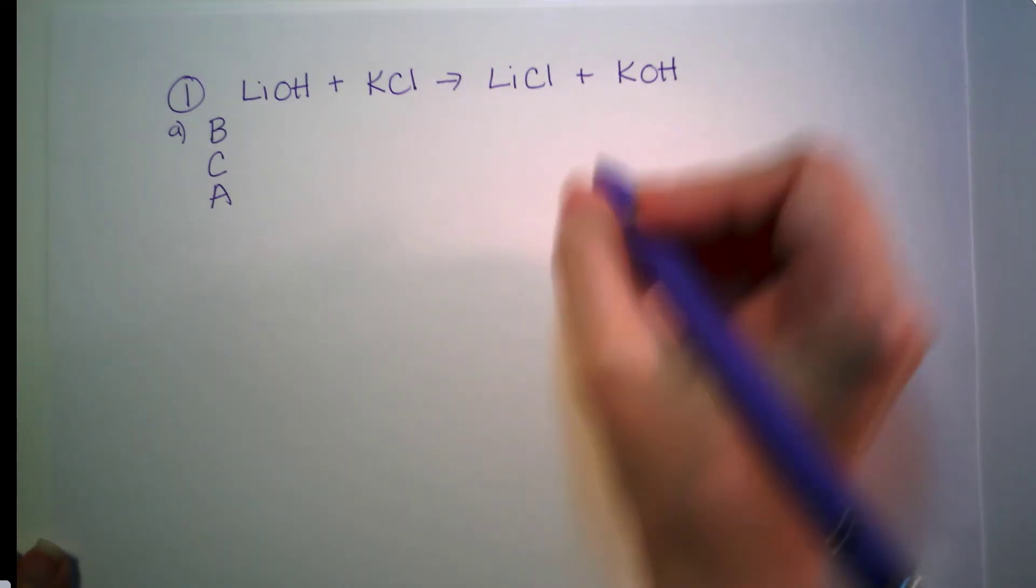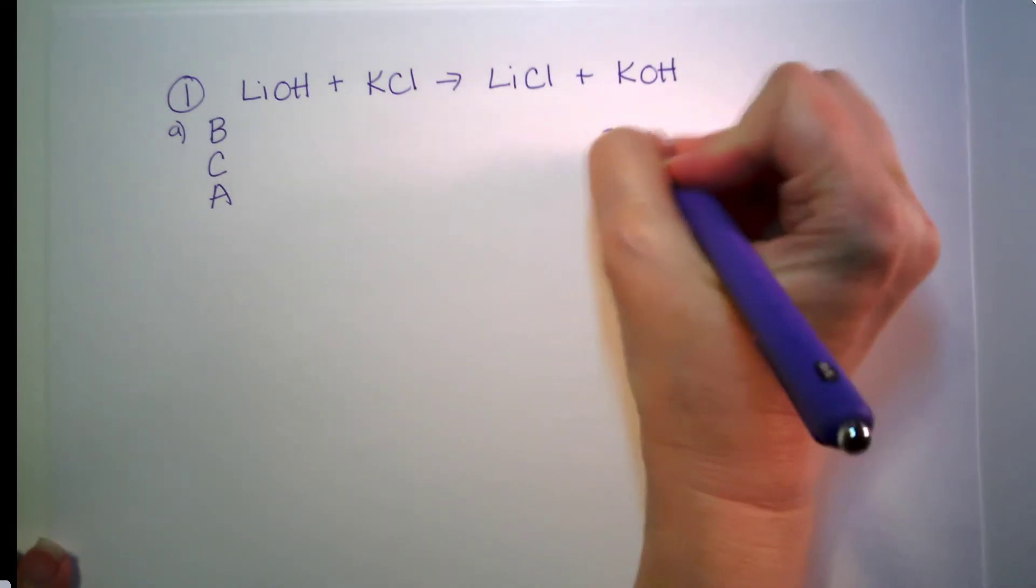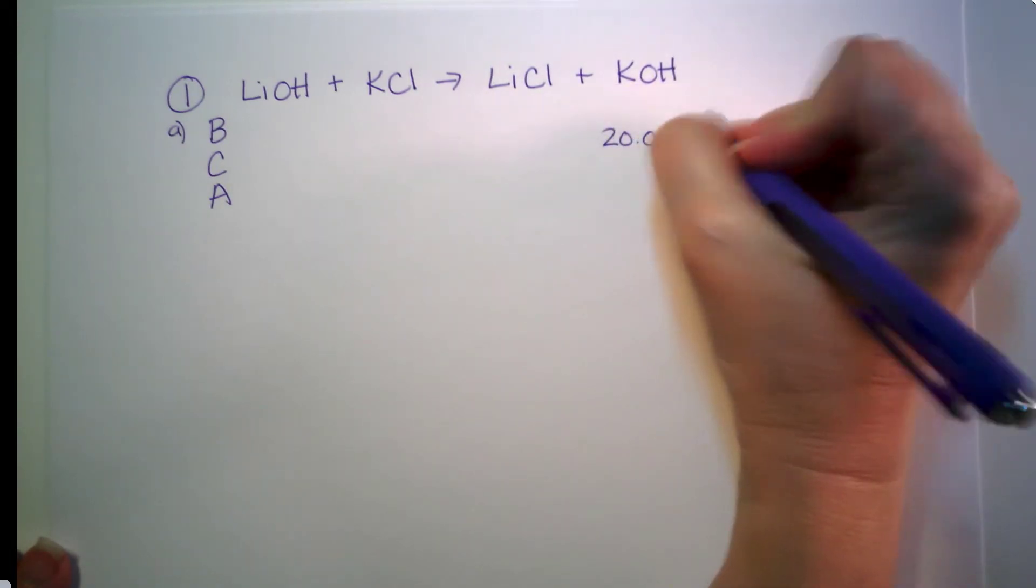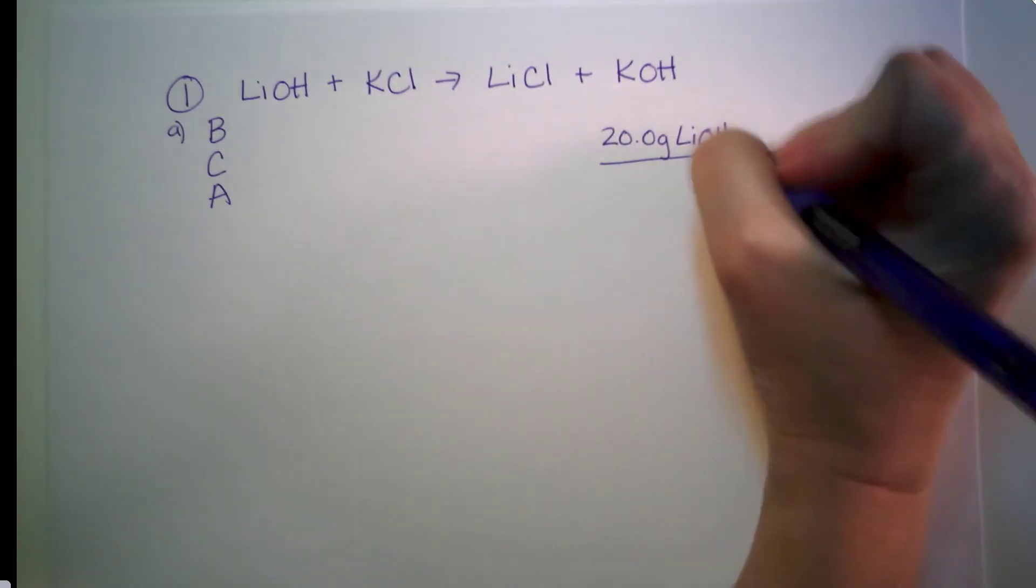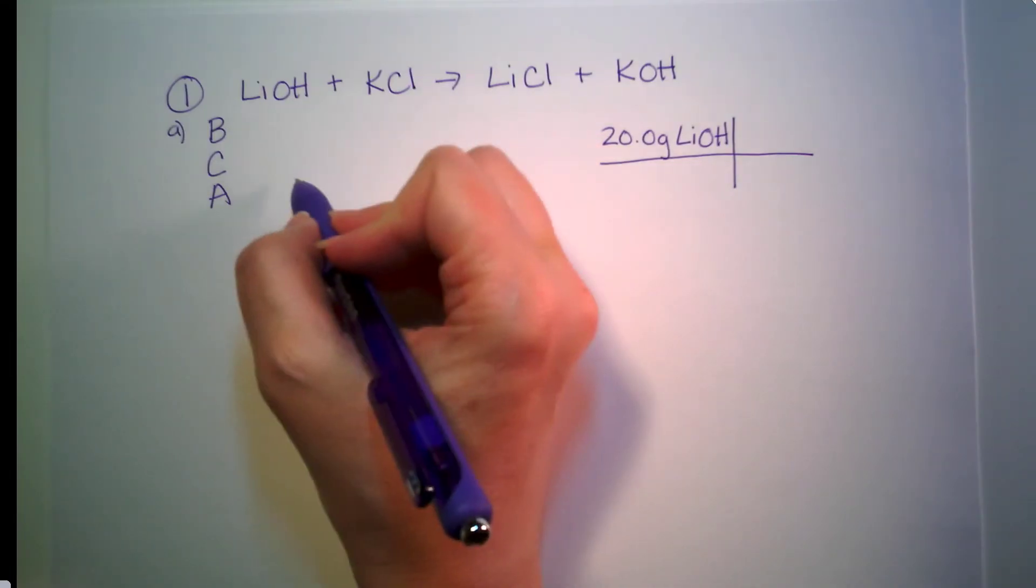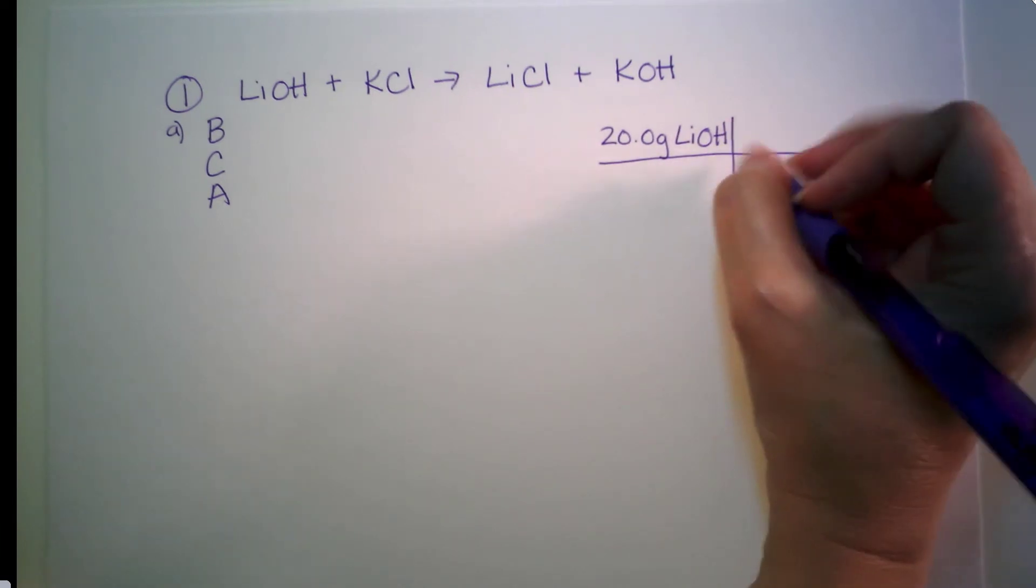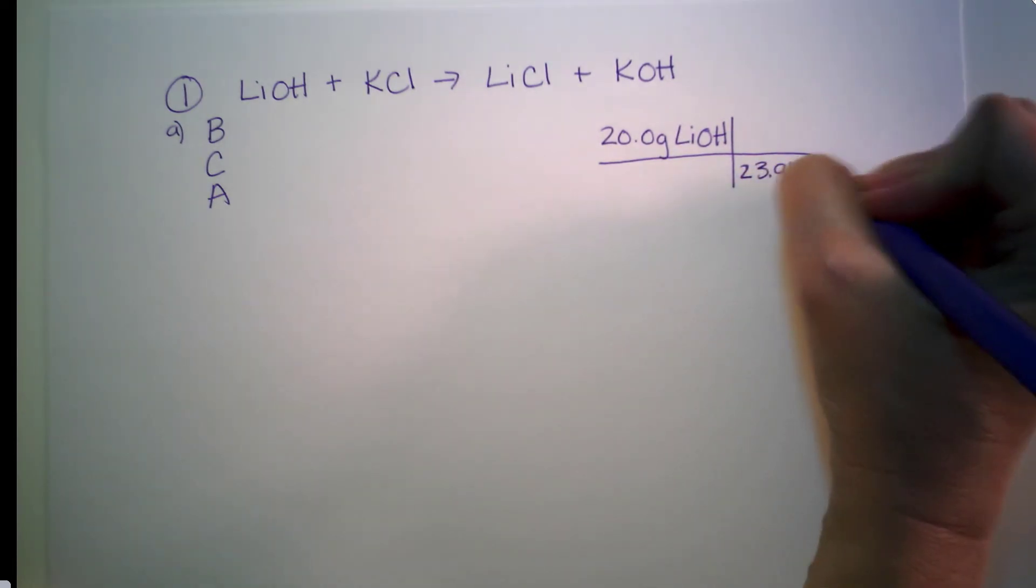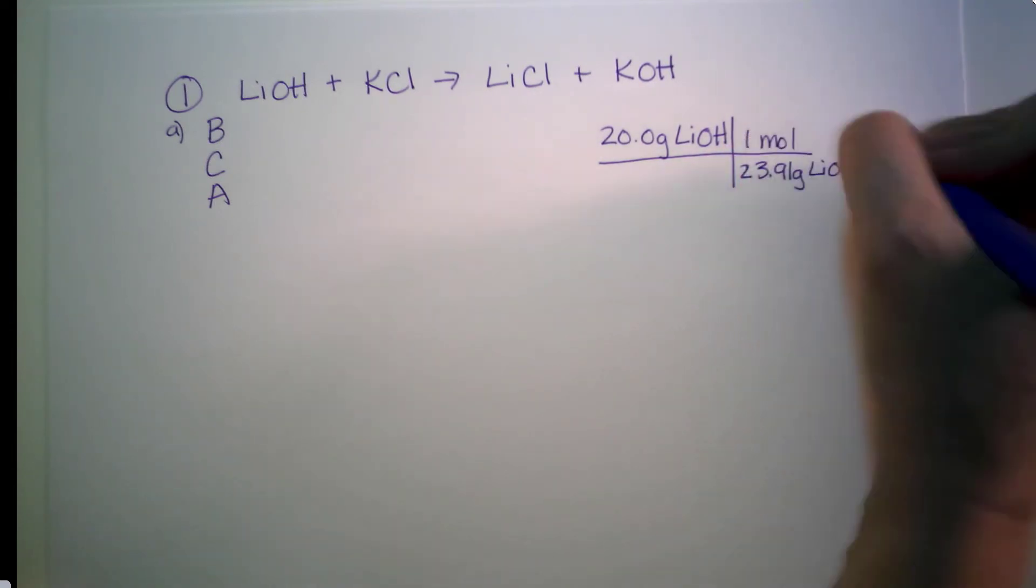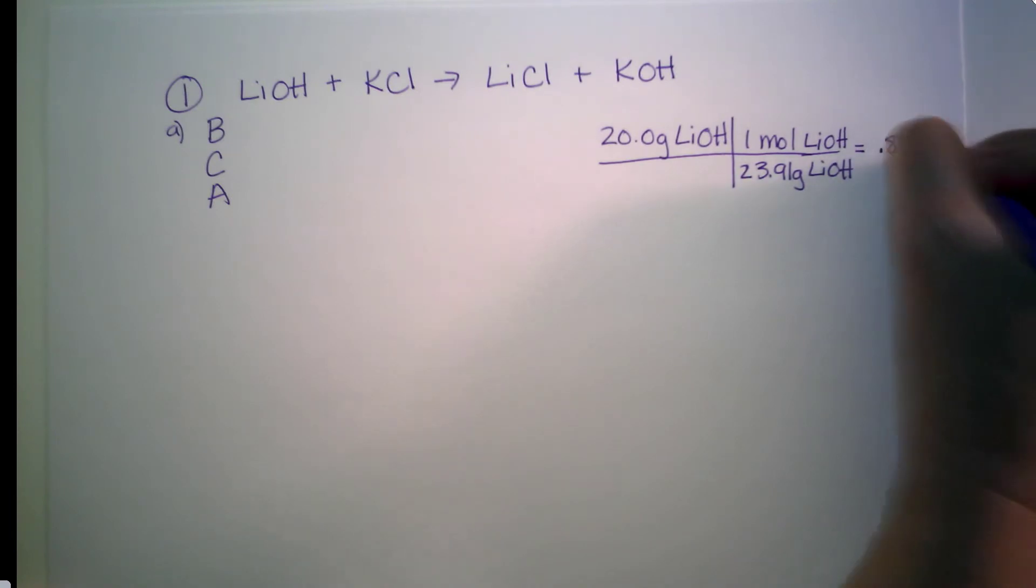What are we given in the problem? We are given that we have 20 grams of lithium hydroxide. So knowing that, think back to everything that we've been doing. What do we need to do? I'm going to figure out how many moles that is, because in here, I can't put grams, I can only put moles. So this is 23.91 grams of lithium hydroxide. Molar mass off the periodic table, because that is equal to one mole of lithium hydroxide. We do our math, and we get 0.836 moles of lithium hydroxide.